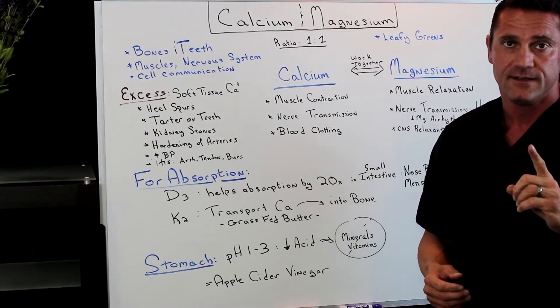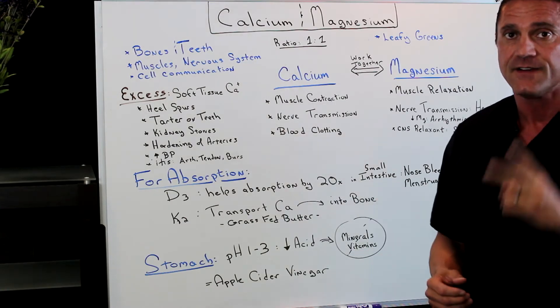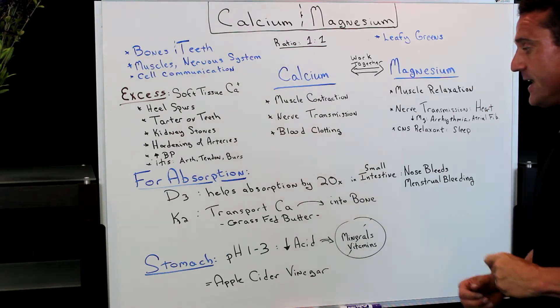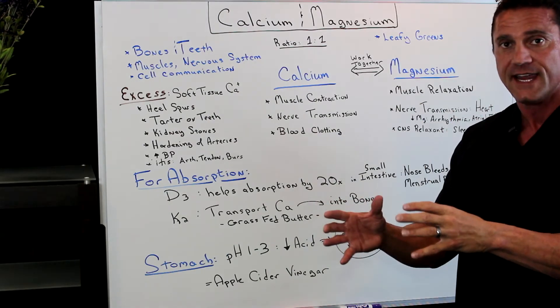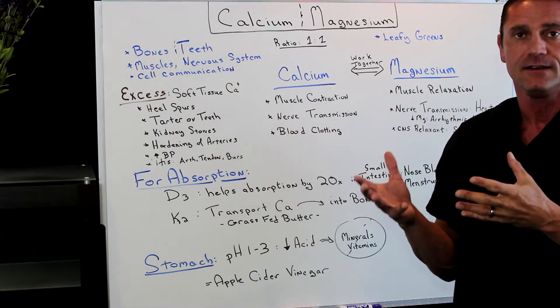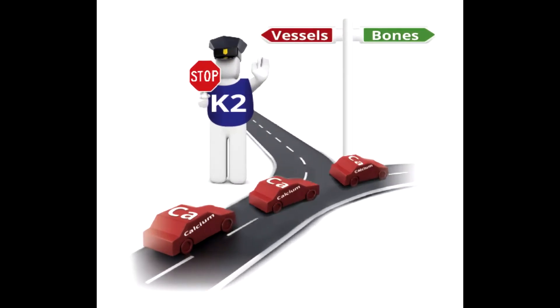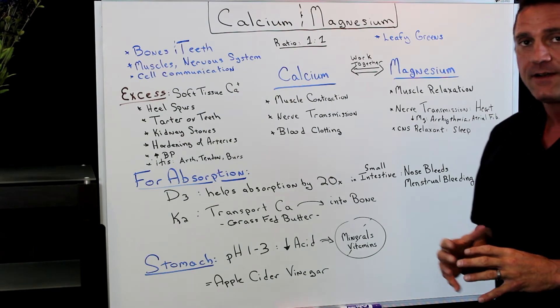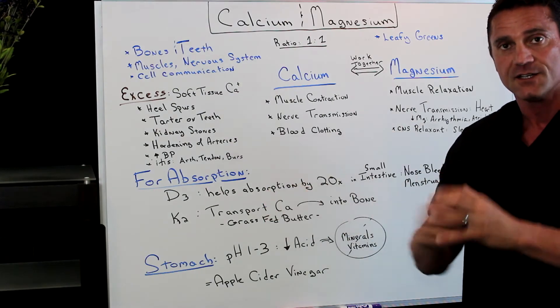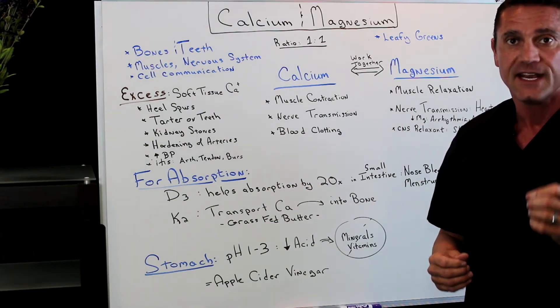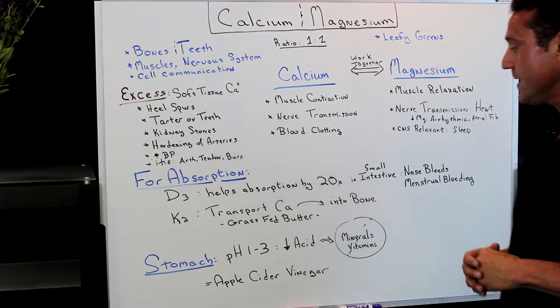But it doesn't stop there because we also need another vitamin called vitamin K2. Now, vitamin K1 is involved with blood clotting. So this is vitamin K2. Vitamin K2, it helps transport the calcium from the blood into the bones and teeth where it belongs. So where do you find vitamin K2? A supplement, which I always recommend, but also in grass-fed butter and also in NATO.